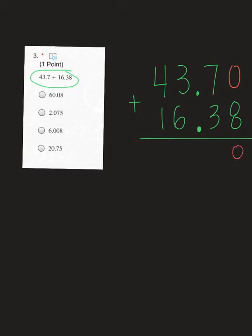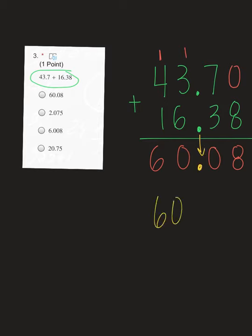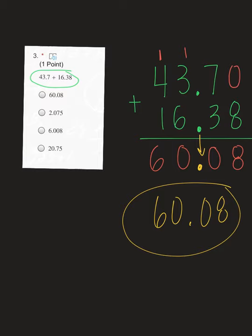Now I'm ready to add. 0 plus 8 is 8. 7 plus 3 is 10 — put your 0, carry your 1. 1 plus 3 is 4. 4 plus 6 is 10 — put your 0, carry your 1. 1 plus 4 is 5. 5 plus 1 is 6. When you're adding or subtracting decimals, drop your decimal straight down into your answer, which should have been 60.08. That would have been answer choice A on your Microsoft form.